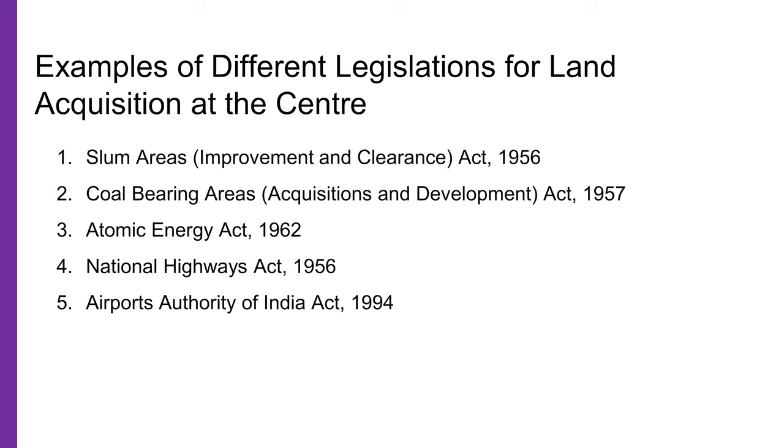Now that we know what land acquisition means, let us turn to the laws that govern it. The foremost thing to learn about the law of land acquisition is that there are many different legislations that can acquire land for different purposes. At the central level alone, apart from the popular Right to Fair Compensation and Transparency in Land Acquisition, Rehabilitation and Resettlement Act 2013, there are 10 other legislations under which land can be acquired. At the state level, there are at least 60 other legislations. The first inquiry in an event of land acquisition should be about the law under which the process has been initiated — it could be the National Highways Act, the Coal Mining Act, or even a state-level slum clearance or industrial development law.